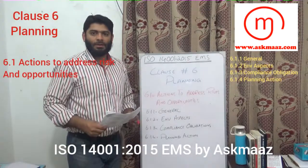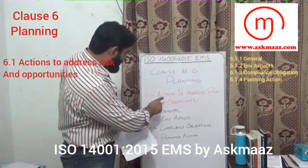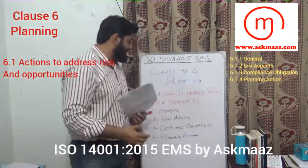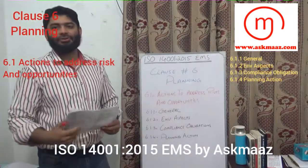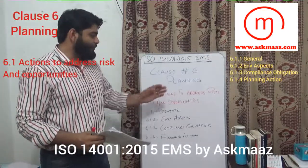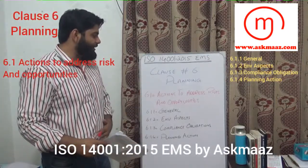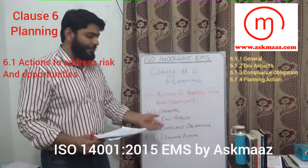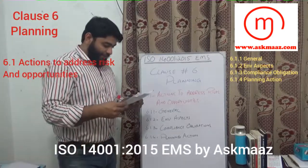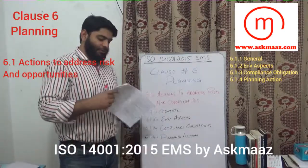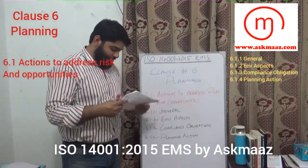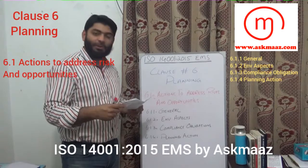Starting with 6.1 — Actions to Address Risks and Opportunities. You have identified risks and opportunities. How to address them, what to plan and how to do it. The first clause is 6.1.1 General.